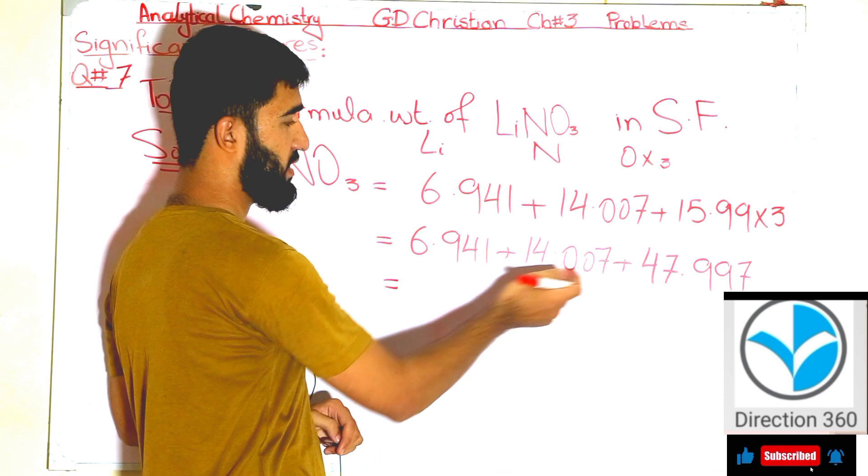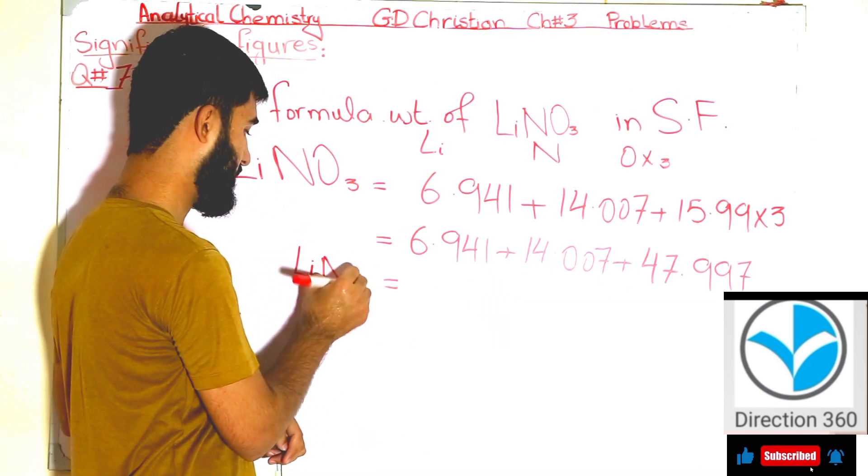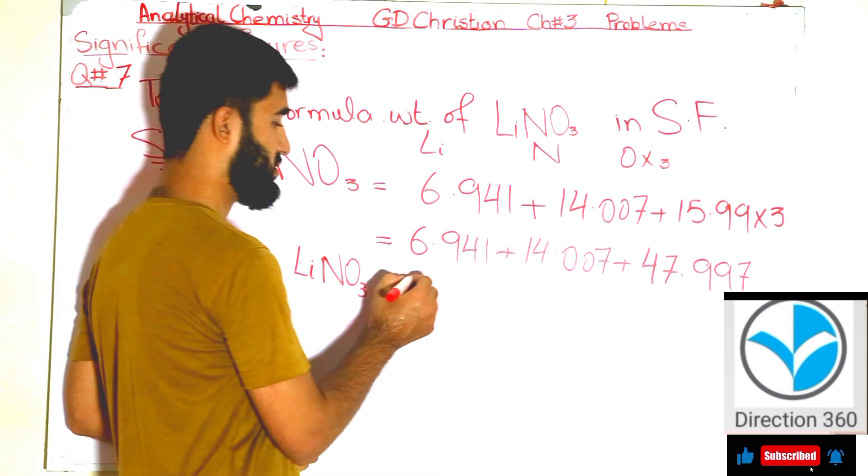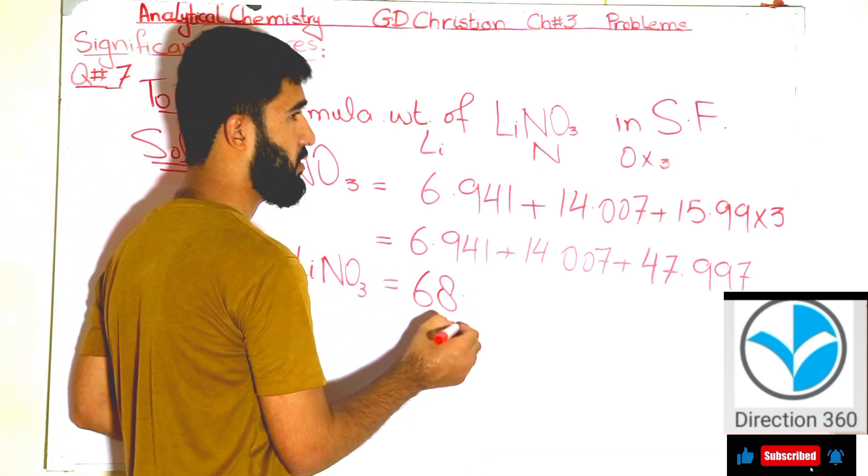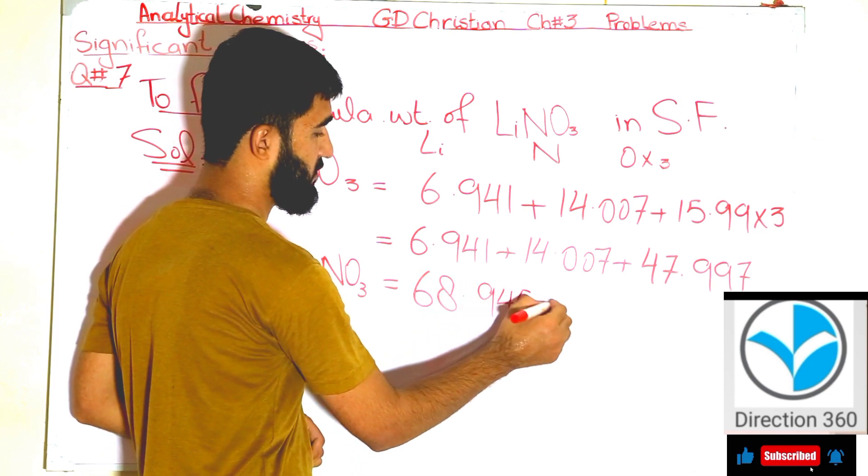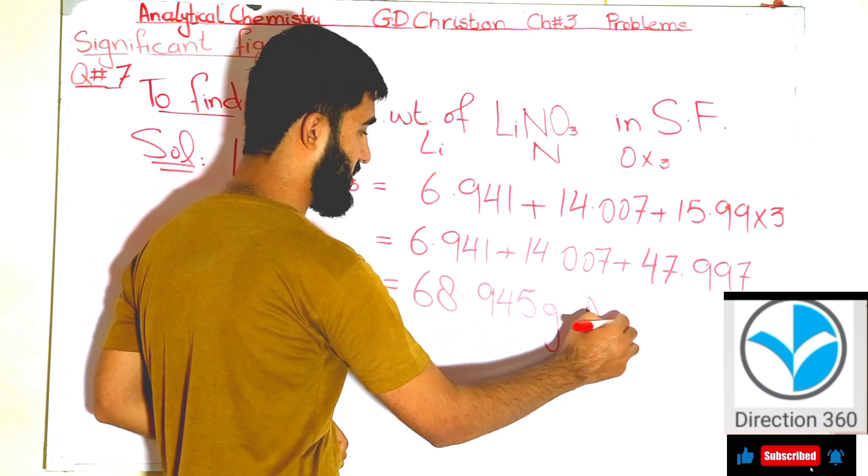Now adding all of this together, LiNO3 equals 68.945 grams. This is our required answer.